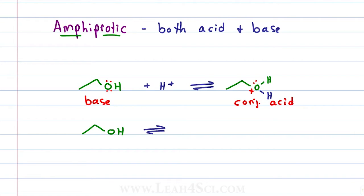If the acid reacts to give up a proton, the resulting molecule is an oxygen with three lone pairs and a negative charge. The alcohol that gives up the proton is our acid and the resulting negative alkoxide is our conjugate base.